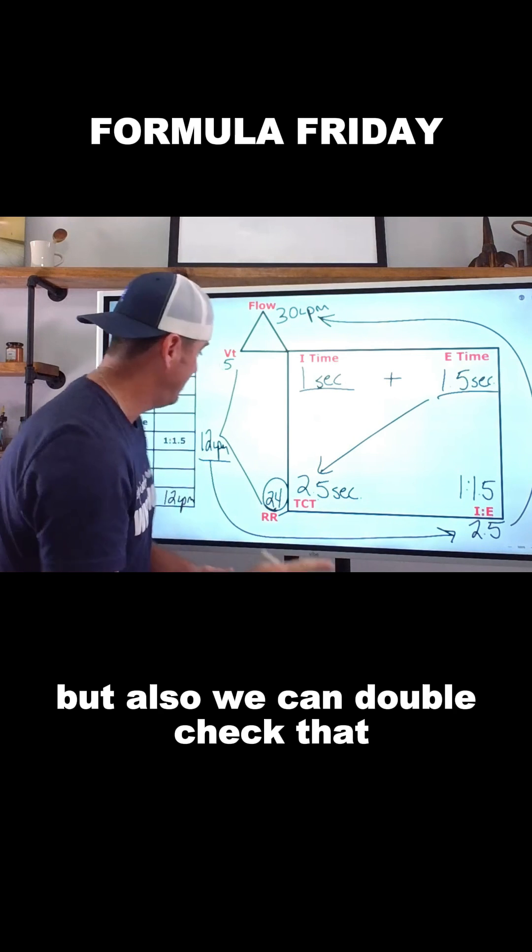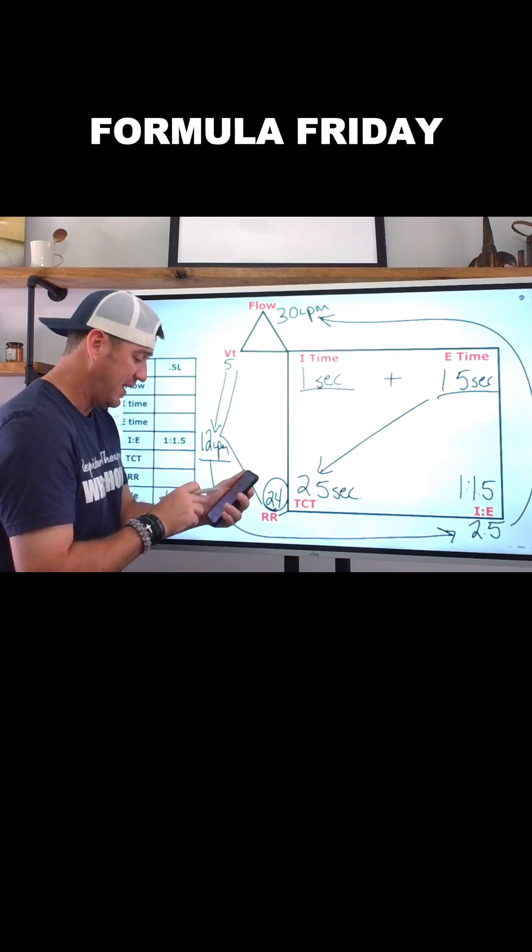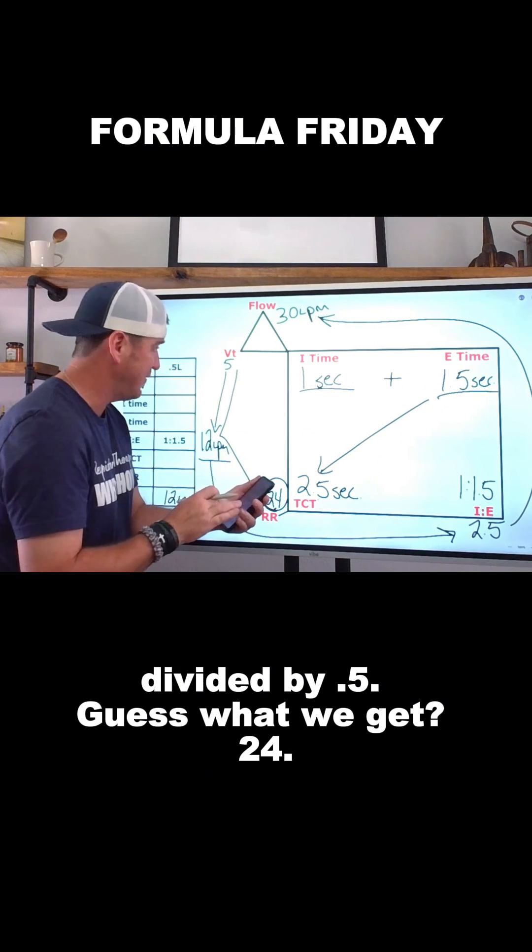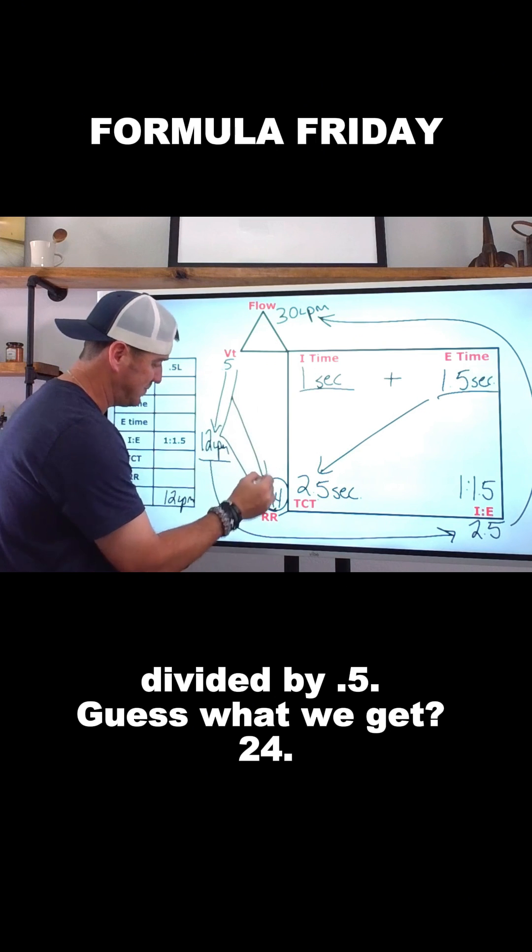But also, we can double check that. If our minute ventilation is 12, then we can do 12 liters per minute divided by 0.5. Guess what we get? 24.